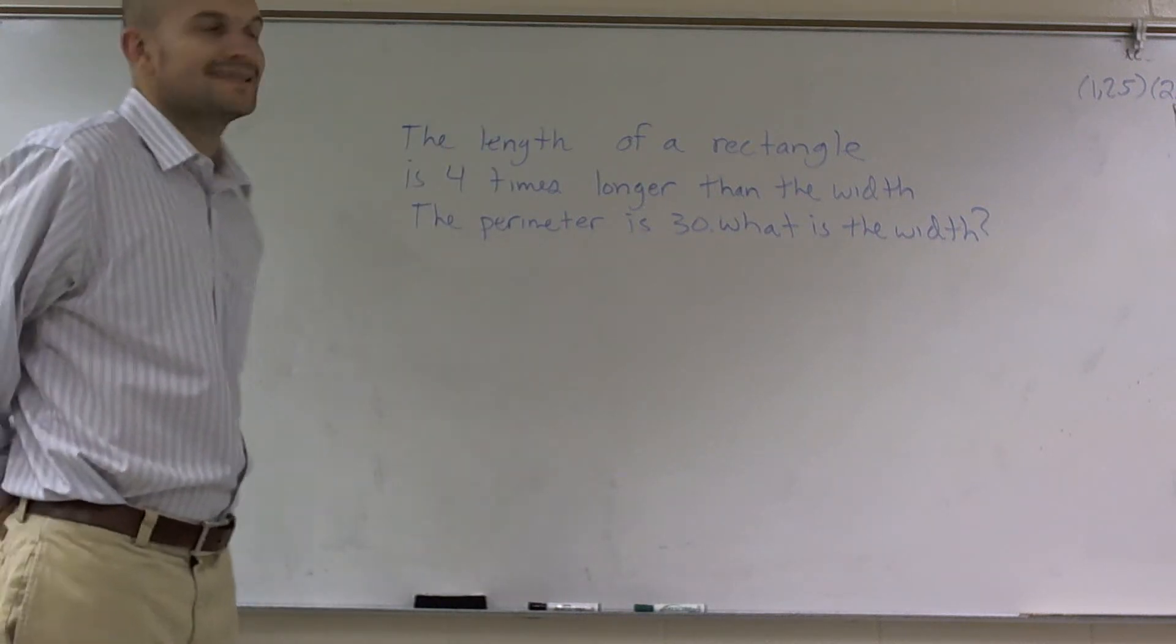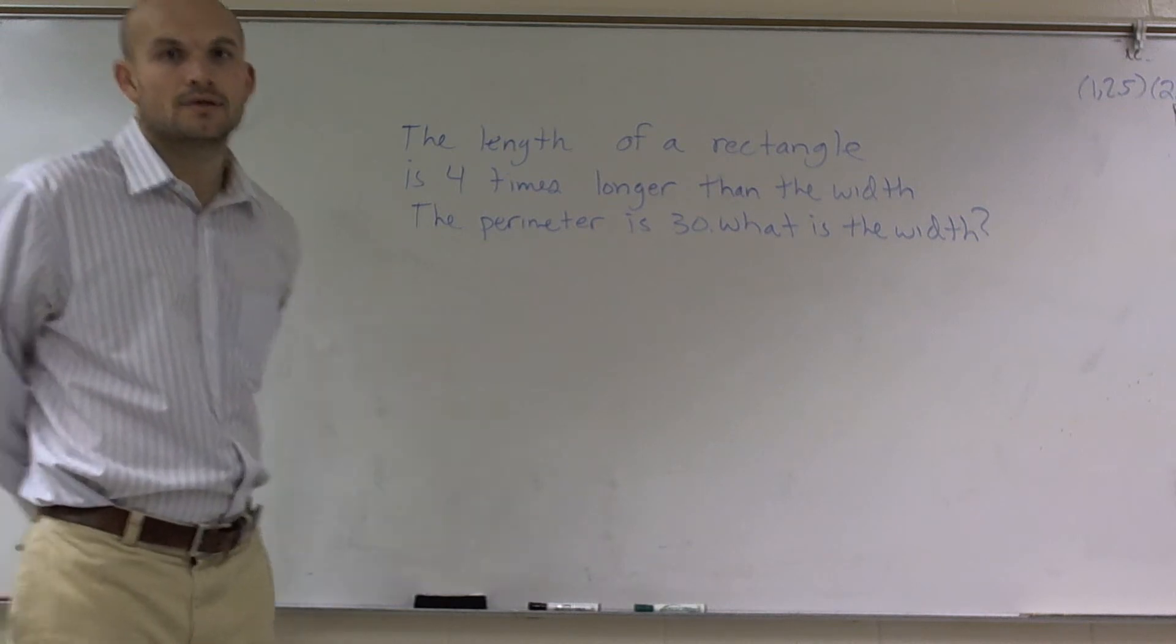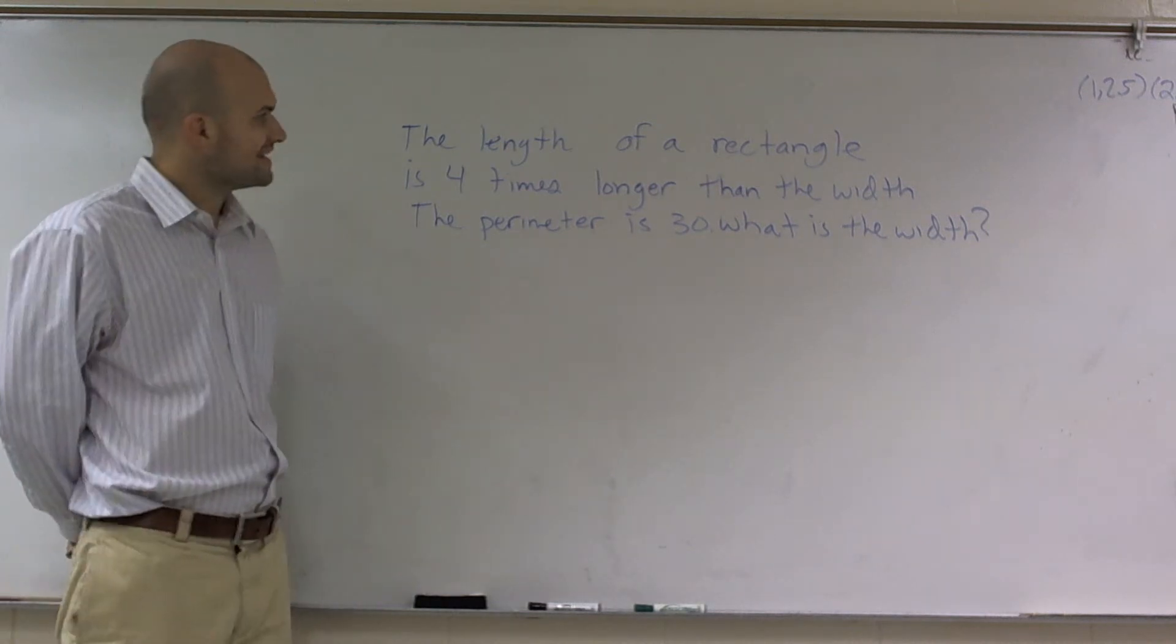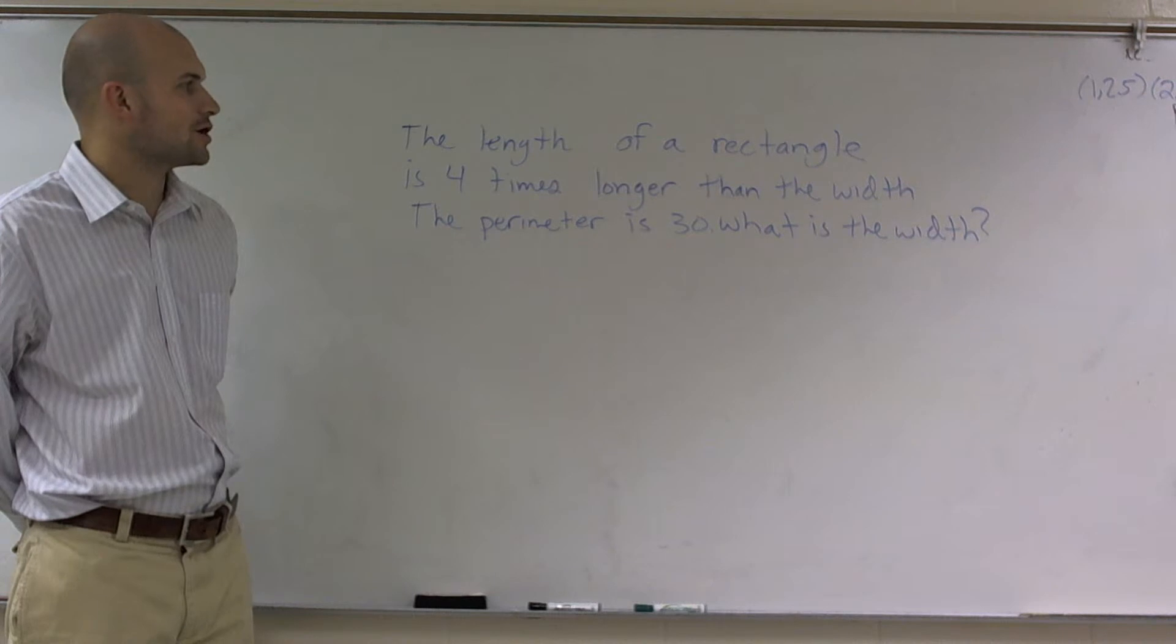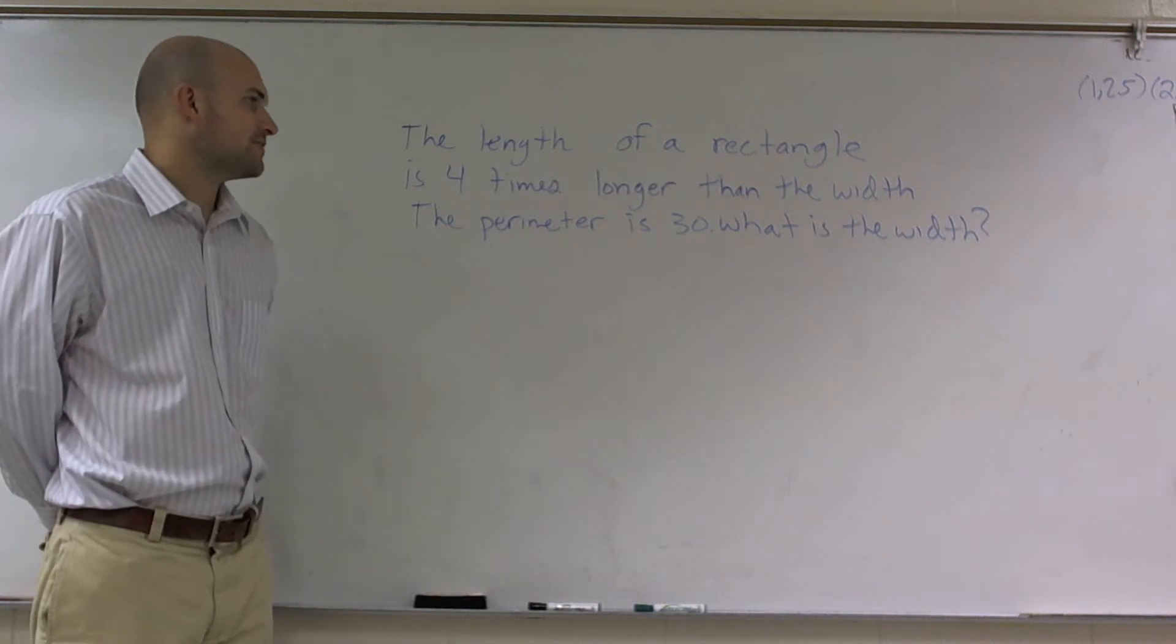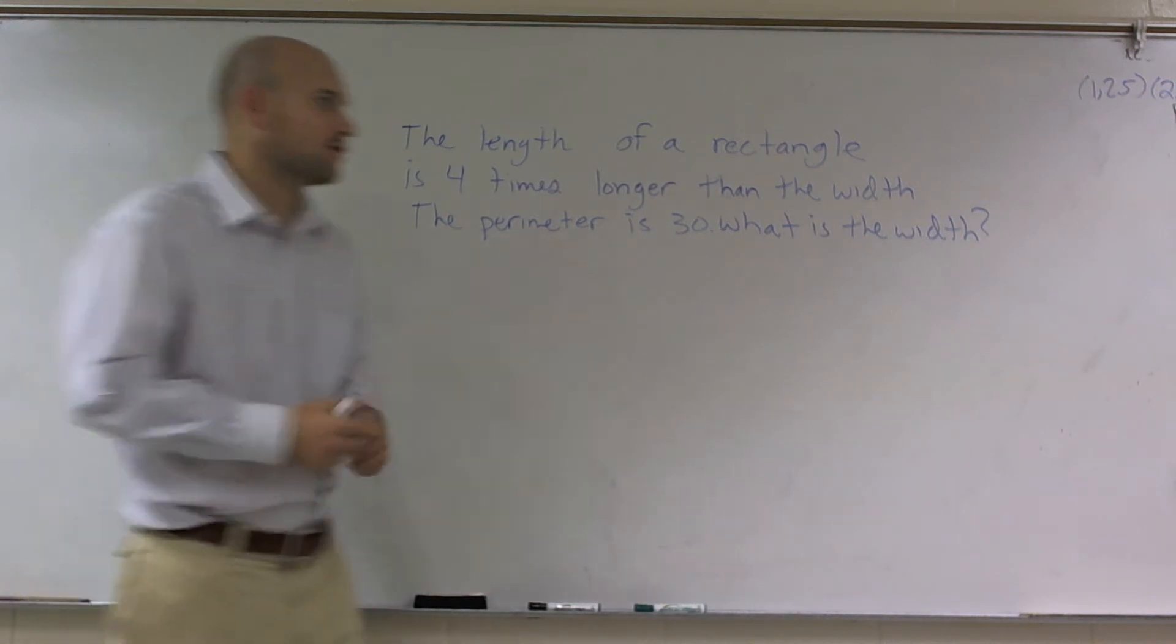OK, this problem says the length of a rectangle is four times longer than the width. The perimeter is 30. What is the width?